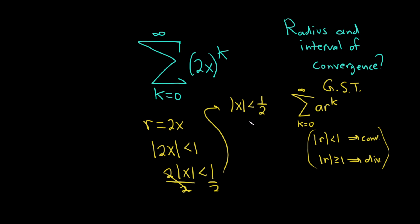The next step is an algebraic one. Whenever you have absolute value of x less than some number, you put a less than on both sides with a negative: negative 1 half less than x less than 1 half. You can reason it intuitively — the absolute value of x is the distance between x and 0, so x must be between negative 1 half and 1 half. So this is going to be the interval of convergence: negative 1 half to 1 half.